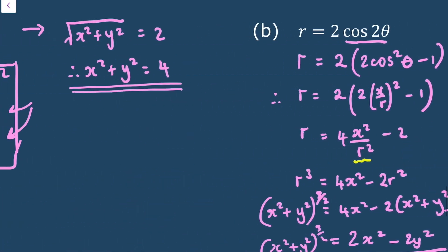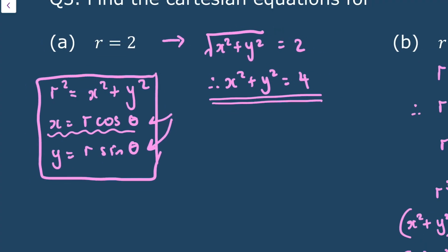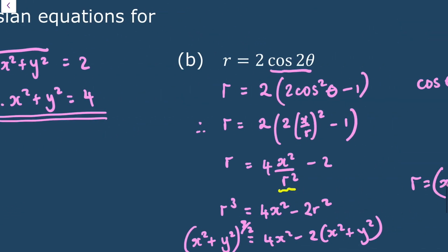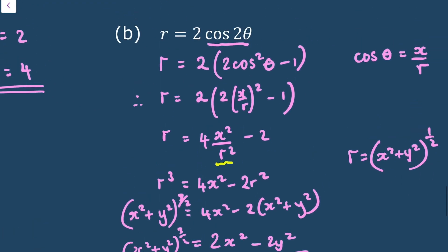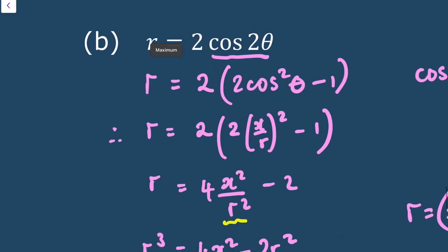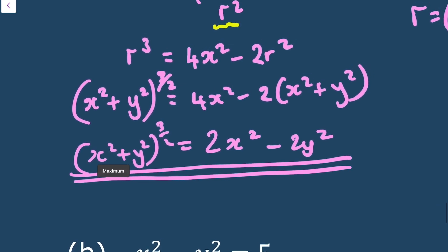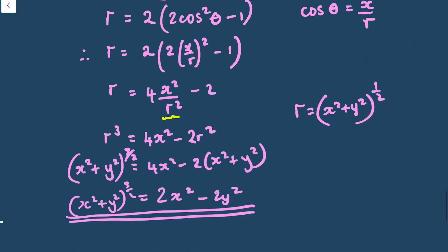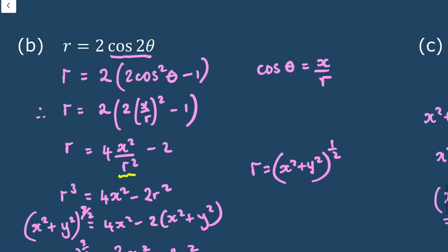In the next section, we'll look at sketching these curves. We know that r equals 2 will look like a circle, but we'll also look at sketching polar equations in forms like r equals 2 cos 2 theta, which is much more intuitive to sketch in polar form than working from the Cartesian equation.